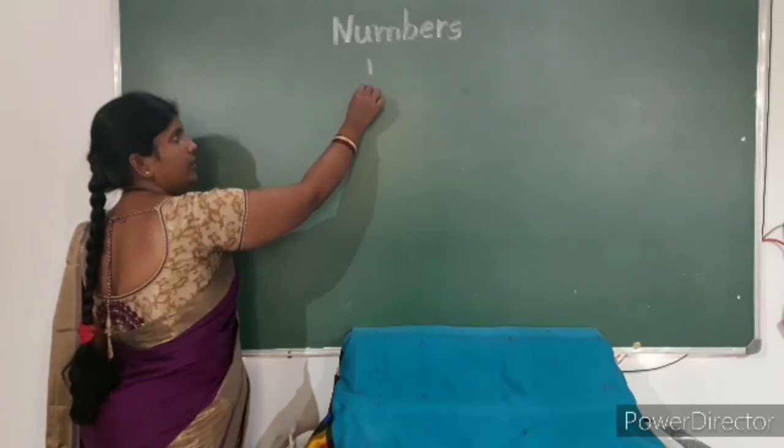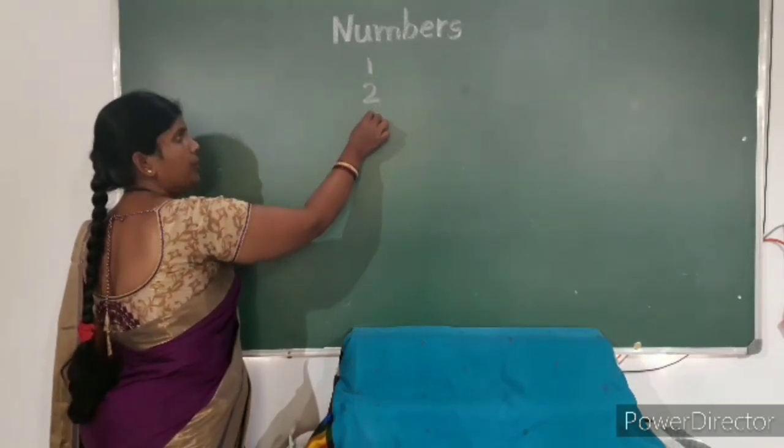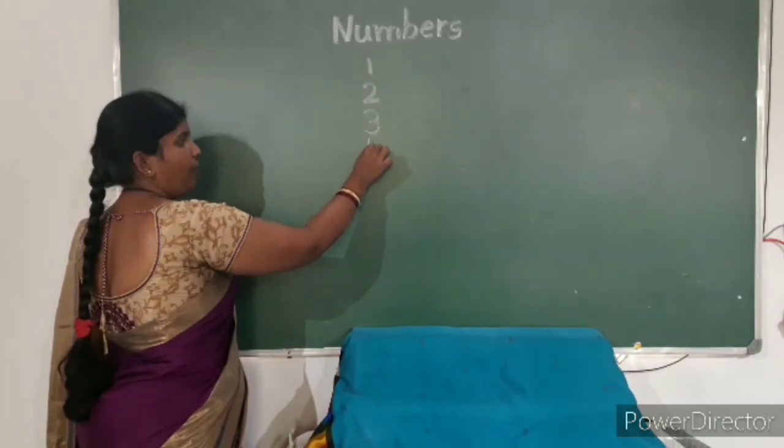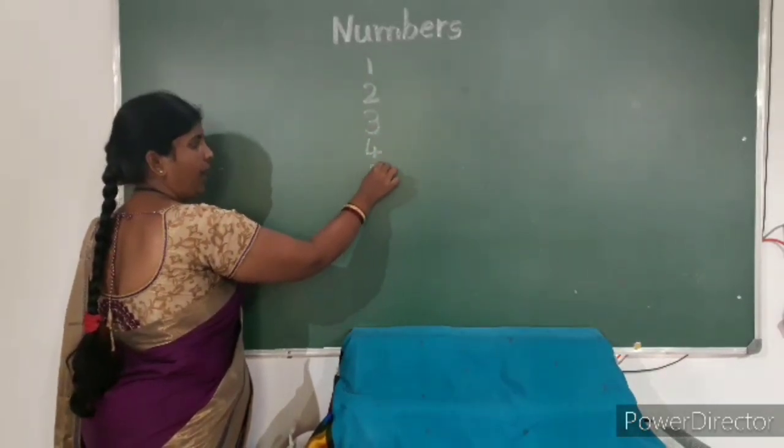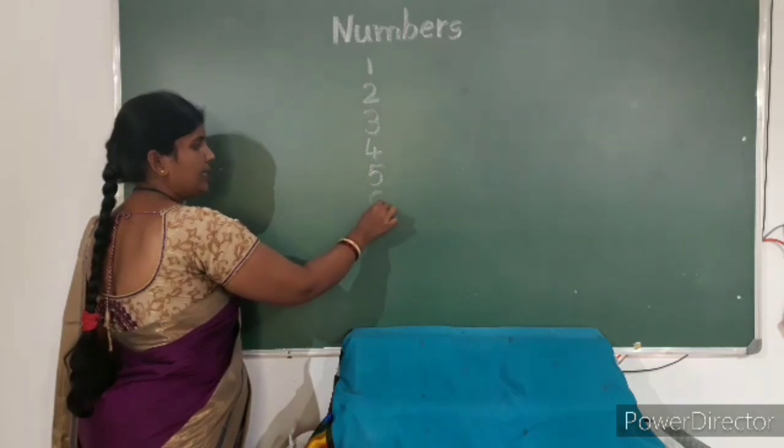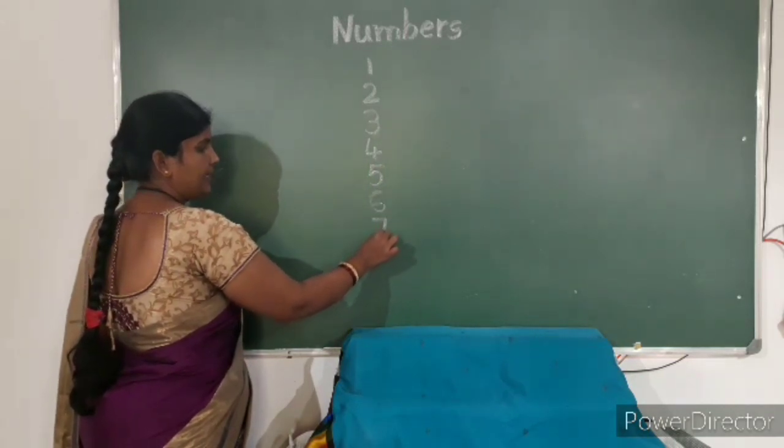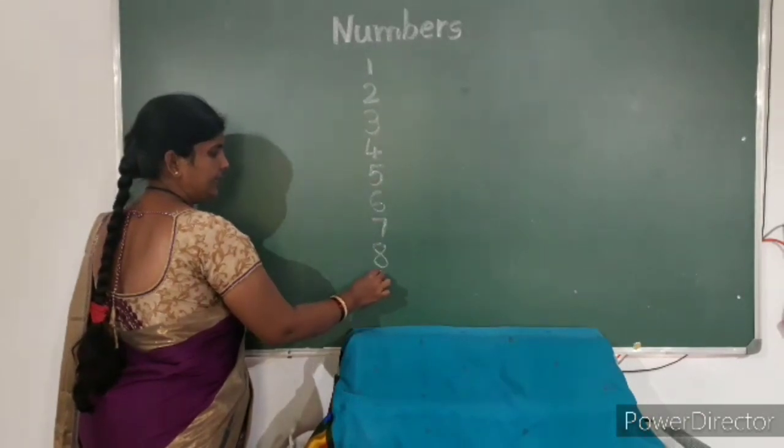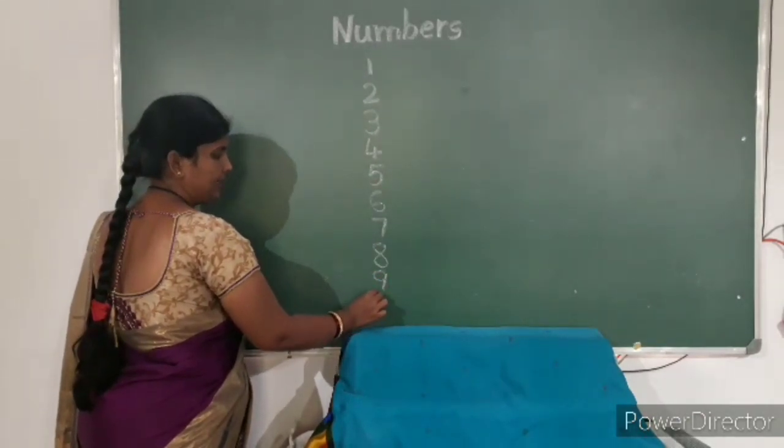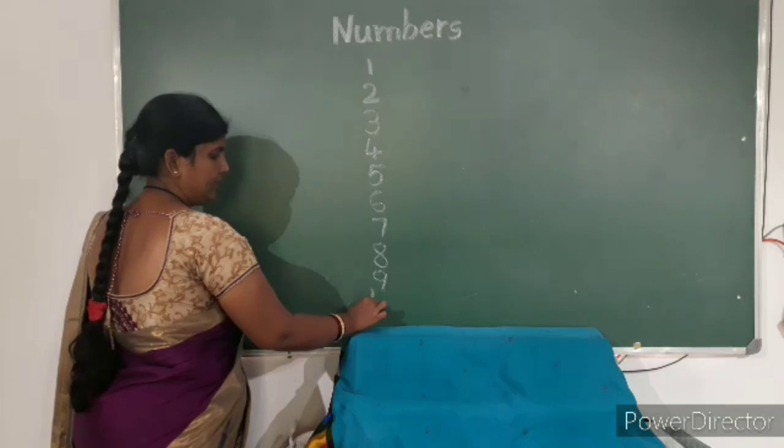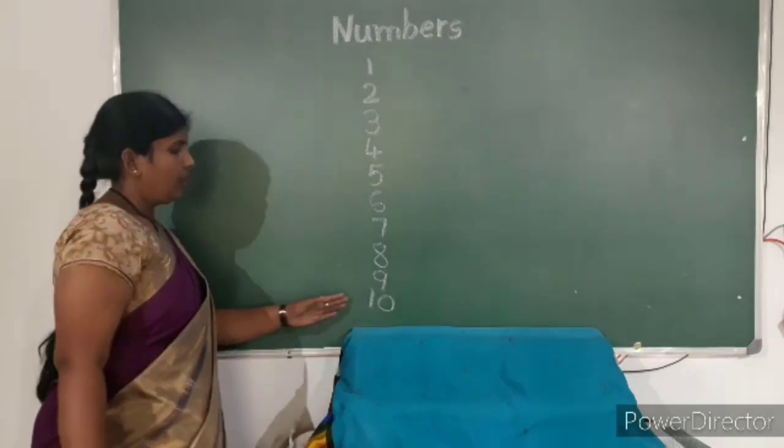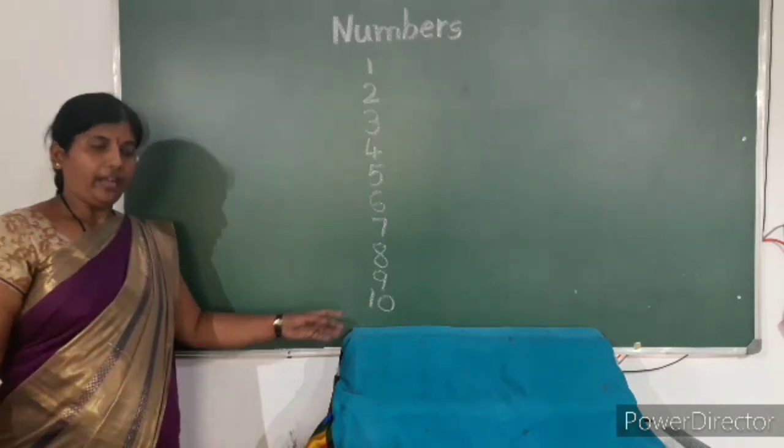1, 2, 3, 4, 5, 6, 7, 8, 9, 10. Now count the numbers backward.